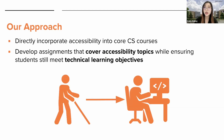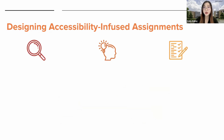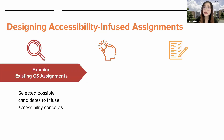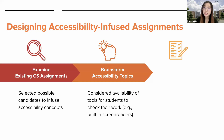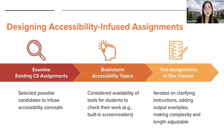To tackle this issue, our research bridges the accessibility education gap in CS programs by pioneering an approach that directly incorporates accessibility assignments into core computer science courses. We developed assignments that covered accessibility topics while ensuring that students still met the learning objectives. Several researchers on this project had extensive experience in accessibility and were also instructors of CS courses, so we went through an iterative process to design and develop these assignments. We started by examining an existing list of assignments and selecting possible candidates to infuse accessibility concepts, then brainstormed ideas and selected concepts that had tools available for students to check their work, such as built-in screen readers. We tested these assignments in our own classes and made improvements, including clarifying the instructions, adding more output examples, and making the complexity and length adjustable.